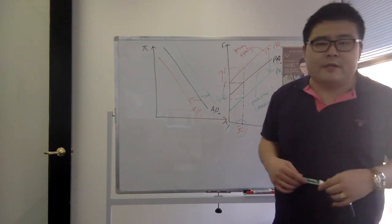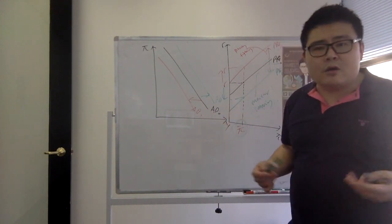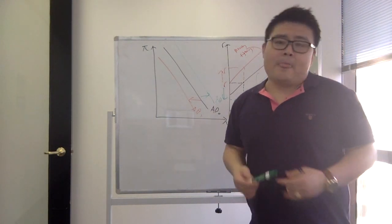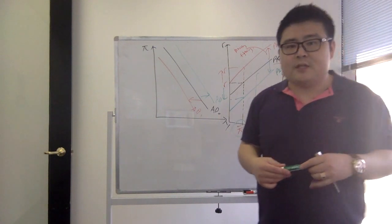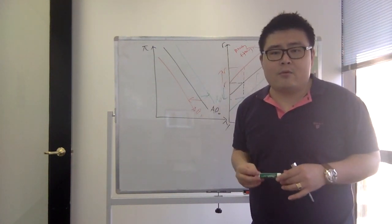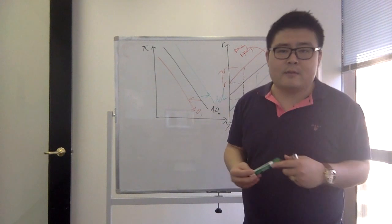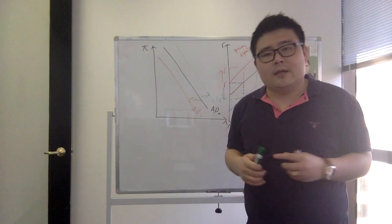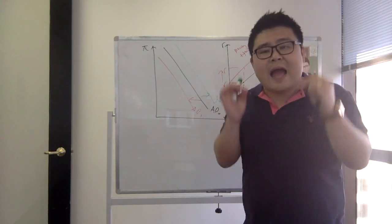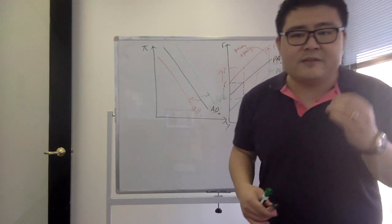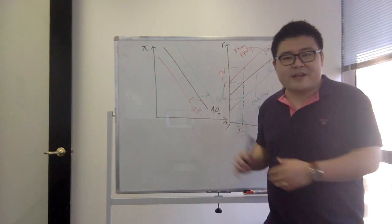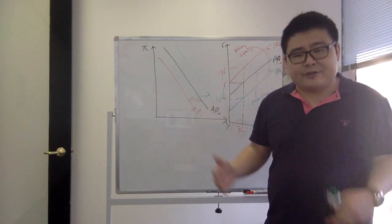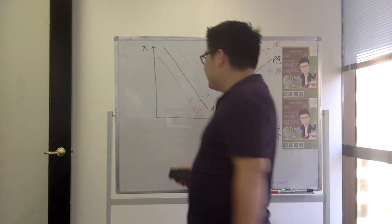You have to be very careful about the movement along the AD and AS curves versus a shift. Whenever we describe the transition between a short-term equilibrium point back to the long-run equilibrium point, it is important to talk about transitioning back to the original point. This transition occurs via movements along the policy reaction function, which correspond to movements along the aggregate demand curve.